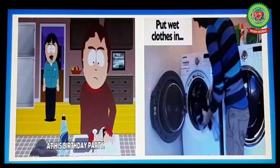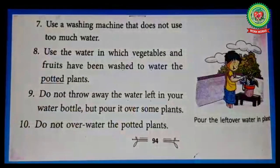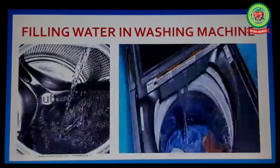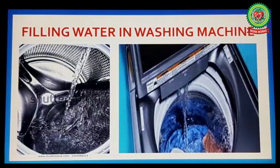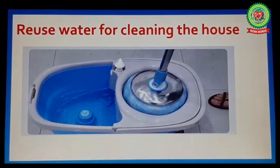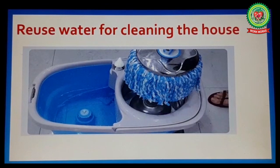Number seven: use a washing machine that does not use too much water. You should not use a fully automatic machine, as it uses much more water than a semi-automatic machine. Moreover, the water from a semi-automatic machine can be further used for cleaning the house.